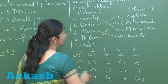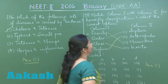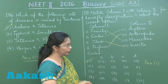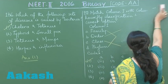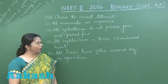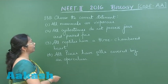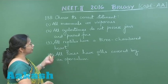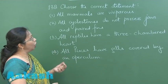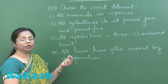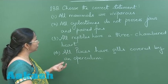Let's move on to question 138, where we have to choose the correct statement. The first statement says all mammals are viviparous, but there is an exception — the egg-laying mammals, Ornithorhynchus and Echidna, which are oviparous. So this statement is incorrect.